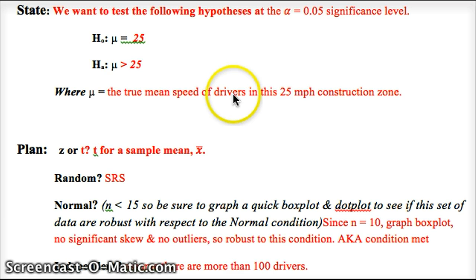And then we define what mu equals. So mu, a sample mean, or a true mean is what we're trying to get at, is the true mean speed of drivers in this 25-mile-per-hour construction zone. We're using t for a sample mean because we don't know the true standard deviation. We just have our sample standard deviation.